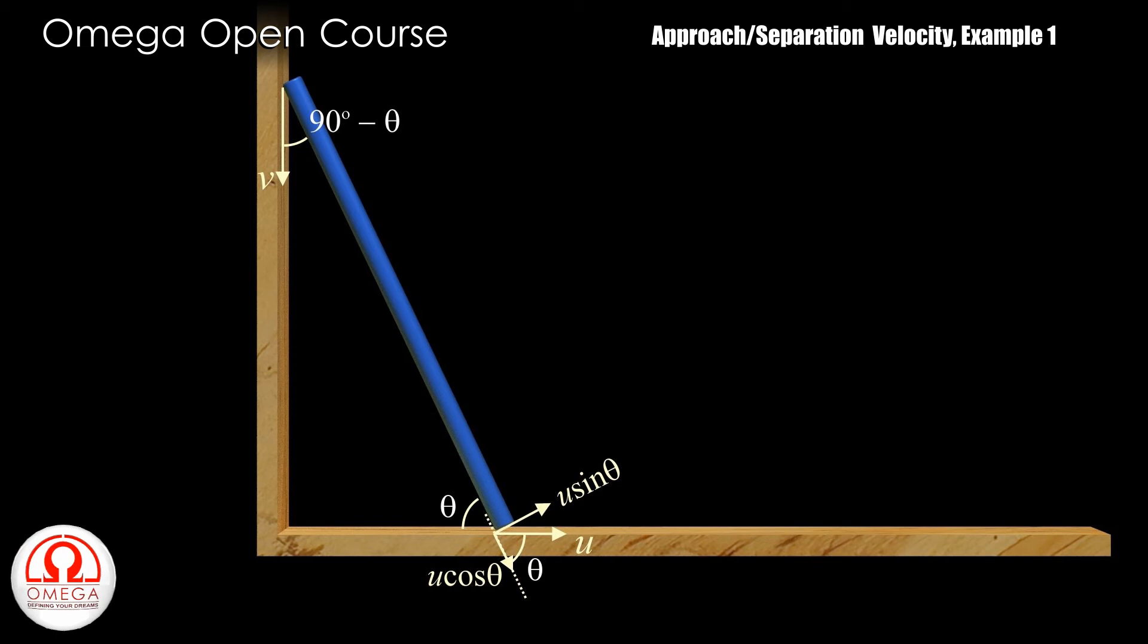Similarly, the radial and tangential components of the upper end are v cos 90 degree minus theta and v sin 90 degree minus theta.